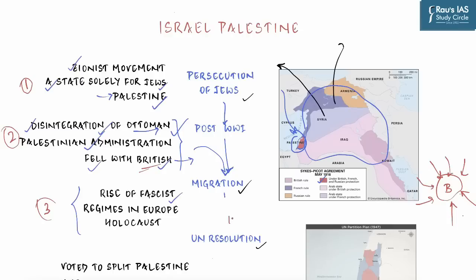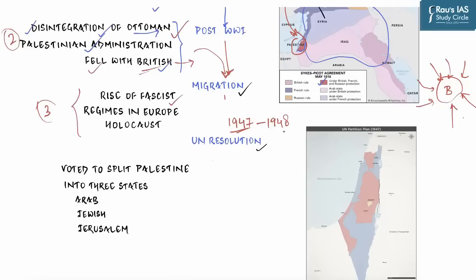By 1947 and 1948, a massive alarm was raised by local Arabs, who were concerned about the increasing Jewish population and started an armed militant movement against the Jewish immigrants. This resulted in retaliation from the Jewish side, leading to a great deal of violence from 1947 to 1948. By this time, World War II had already ended and the British had made up their minds to vacate the Middle East, including the Palestinian region.